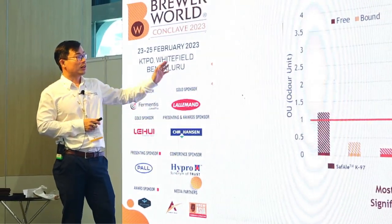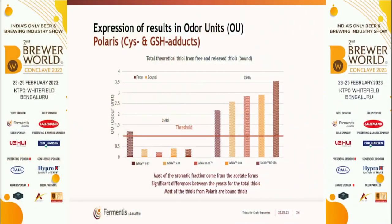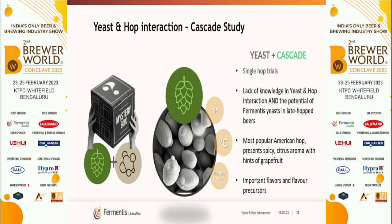So depending on the hop variety and its materials, the yeast plays different roles. If there is not much free thiol in the hop, the yeast can help release a lot more by unlocking the bound form — and even esterify to the acetate form, which is the most impactful.